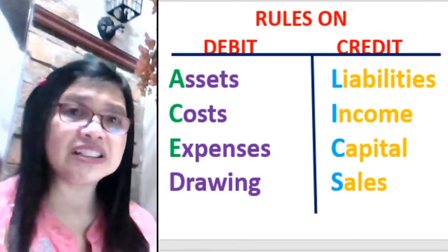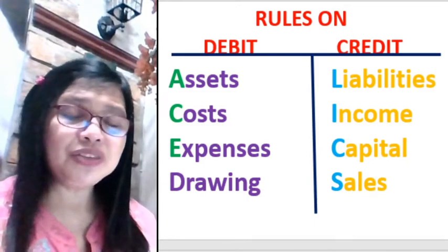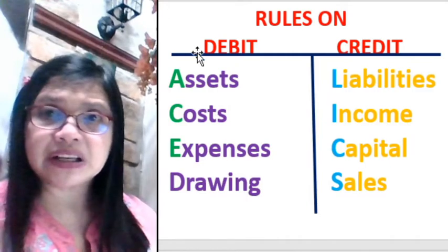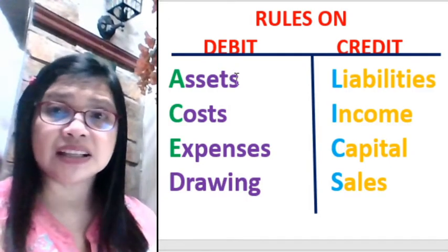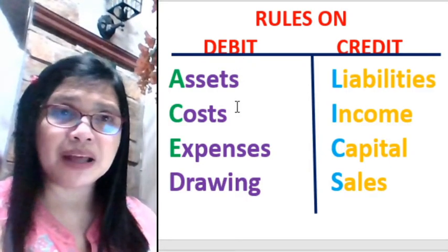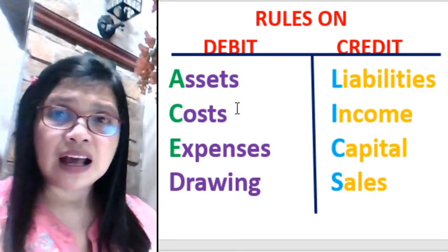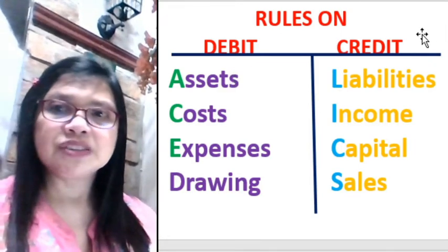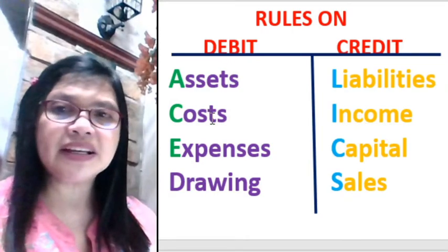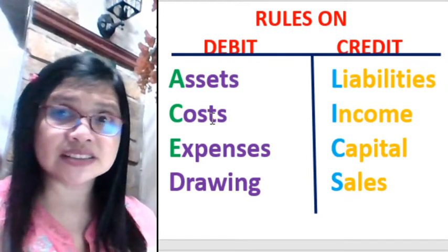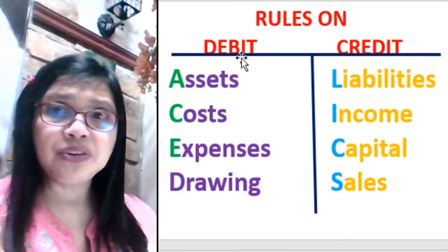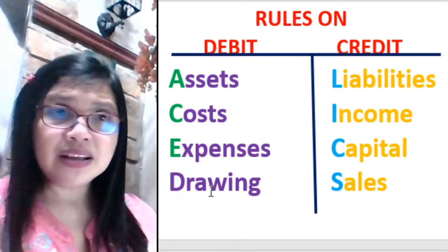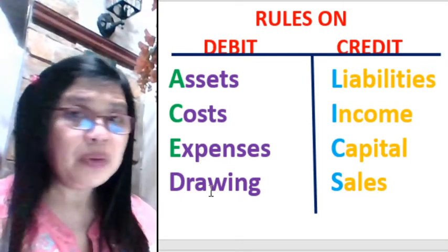To decrease your asset, you do the opposite of its normal balance — you credit it. To decrease costs or expenses, you credit them. Drawing is debited — it is not credited — but it is a deduction to your capital. If you want to decrease your liabilities, you debit them. Income has a normal credit balance; if you want to decrease income, you incur costs and expenses.